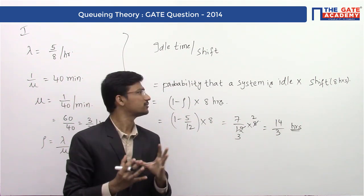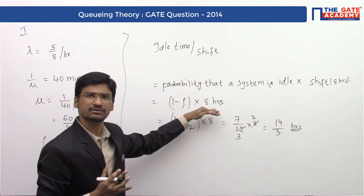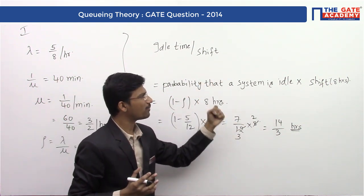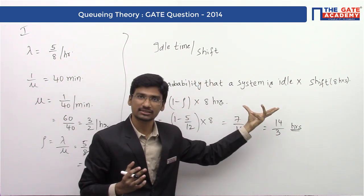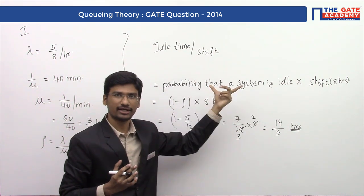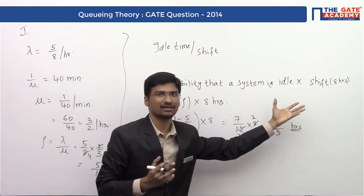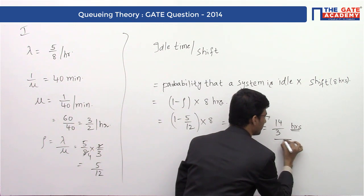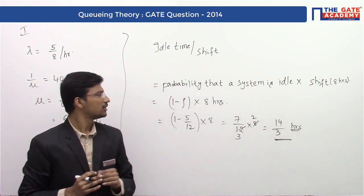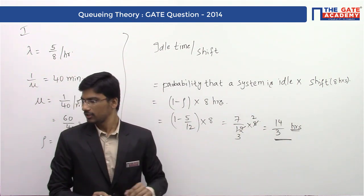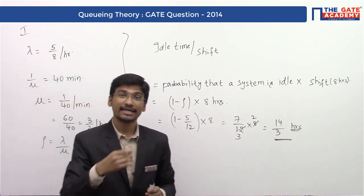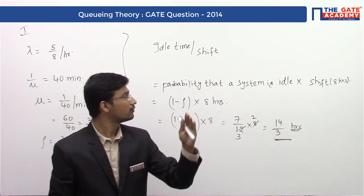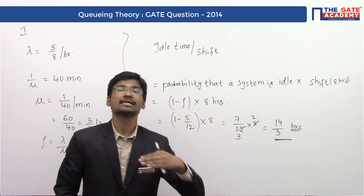This is the general approach in which we have used formulas. We used the probability that the system is idle, then multiplied it with the number of hours. Since the question asks per shift, we multiplied by 8 hours and got idle time as 14/3. Now without using any formula, we can solve this question. We will see that in the second method.